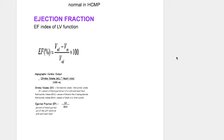Stroke volume is the amount of blood ejected per beat from the heart. At the end of diastole there is blood in the heart, then systole starts, and after the end of systole some blood is still left in the heart. Not all the blood is ejected out per beat. The blood that was ejected out of the heart is the stroke volume, which is the difference between the end diastolic volume and the end systolic volume.